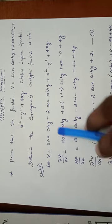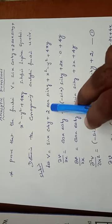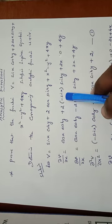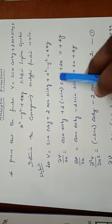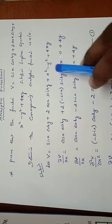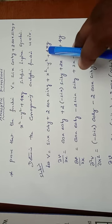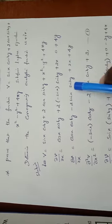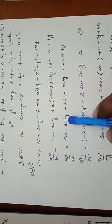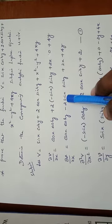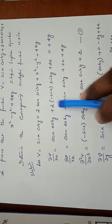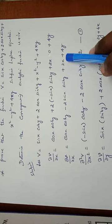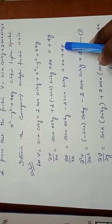Differentiation of sin x is cos x, cosh y is fixed. 2 into differentiation of cos x is minus sin x, sinh y is fixed. Differentiation of x square is 2x, y square is 0, and differentiation of 4xy is 4y. So ∂v/∂x equals cos x cosh y minus 2 sin x sinh y plus 2x plus 4y.